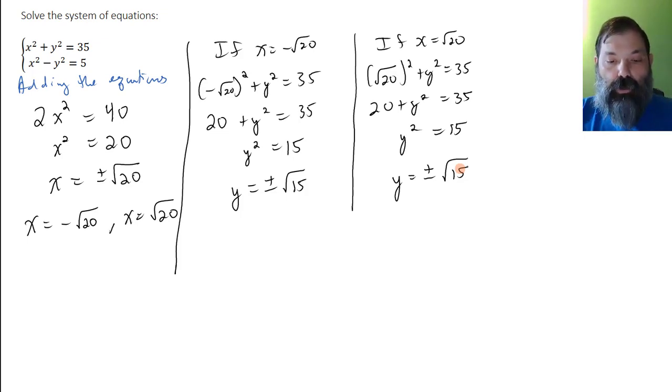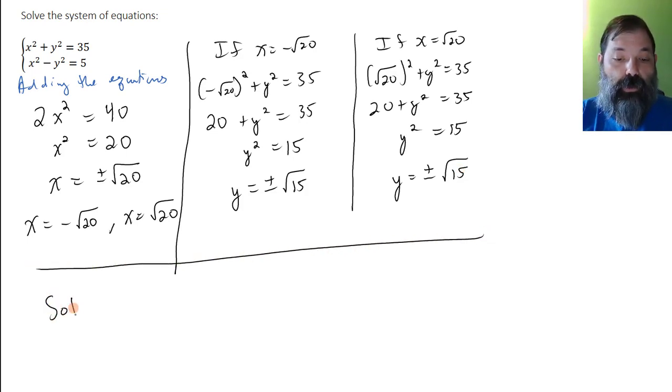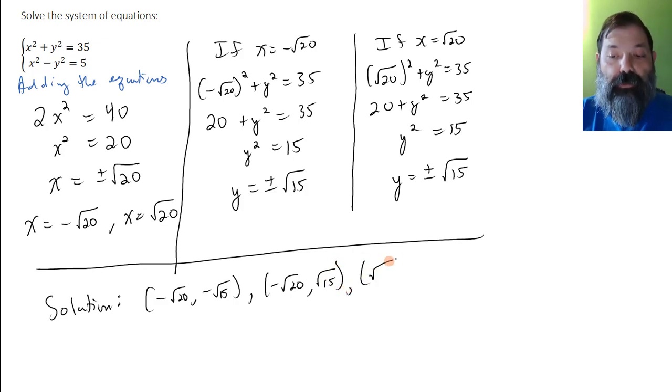So the solutions to this system are actually four ordered pairs, since each x value provided two y values: negative root 20, negative root 15; negative root 20, positive root 15; positive root 20, negative root 15; and positive root 20, positive root 15.